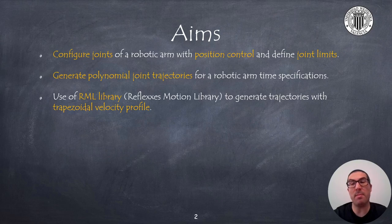CoppeliaSIM implements joint control through the RML library, Reflexes Motion Library, that allows you to easily specify a target configuration controlling aspects such as speed and maximum acceleration. We will learn how to use the API for a specific function of this library to generate trajectories with a trapezoidal velocity profile.